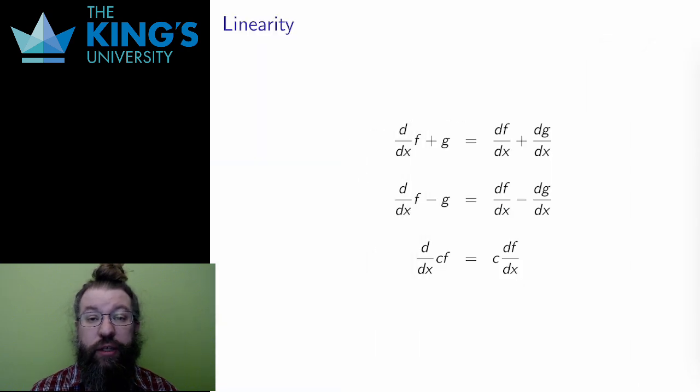I already used the term linearity for limits. Limits were linear because they split up over addition and subtraction, and I could pull a constant out of the limit. The same is true for derivatives. The derivative of a sum or a difference is the sum or the difference of the derivatives, and a constant can be pulled out.